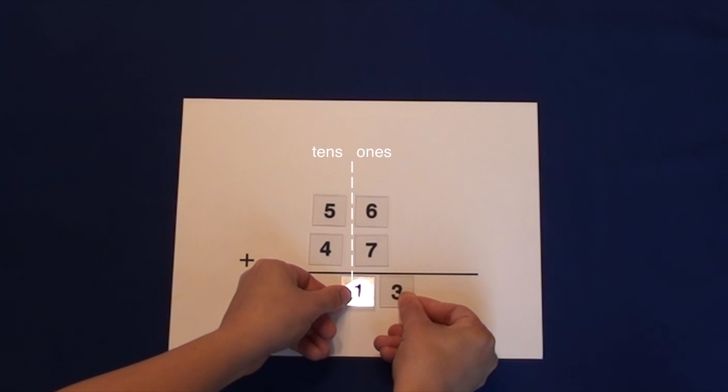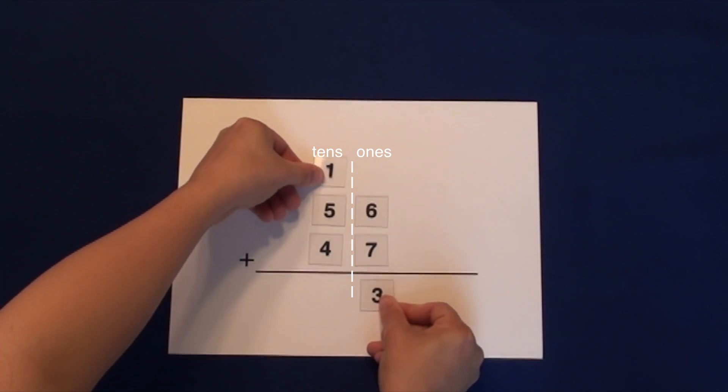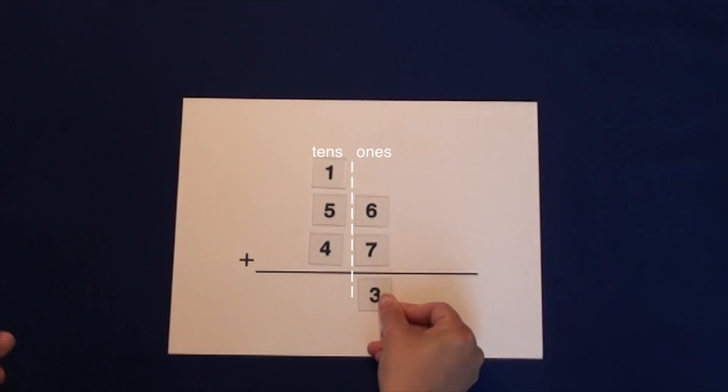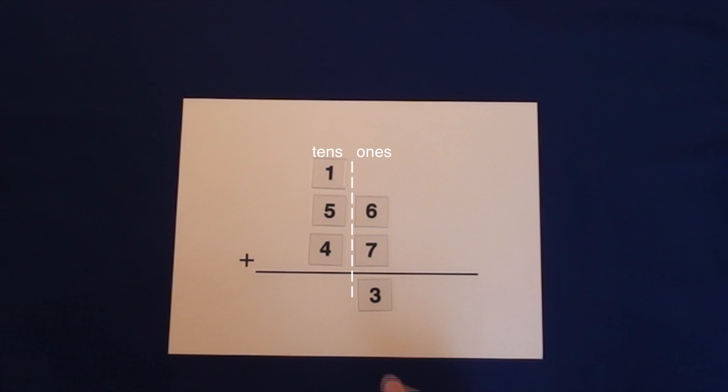13 is more than 9, since 13 has 1 ten and 3 ones. We'll carry the 1 ten to the 10's column and leave the 3 remaining ones.